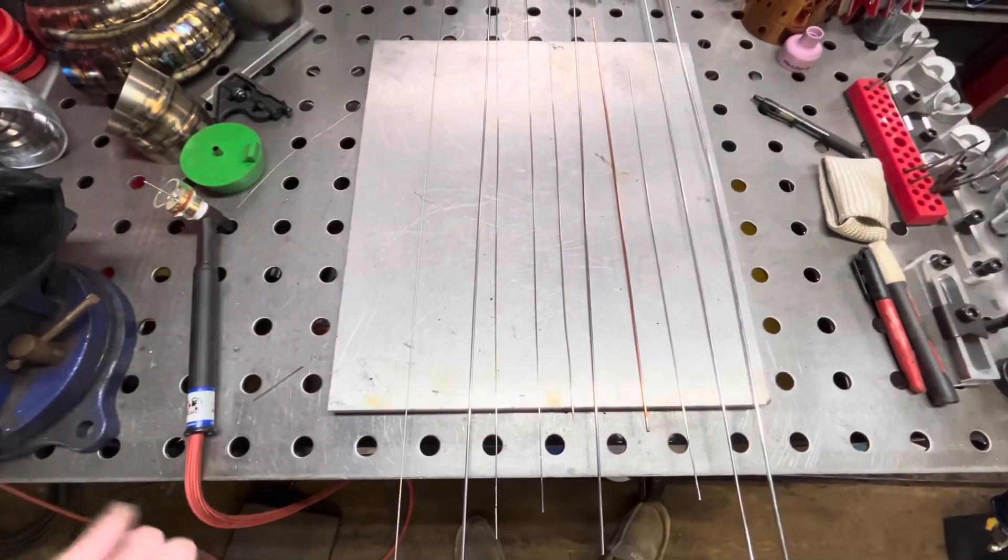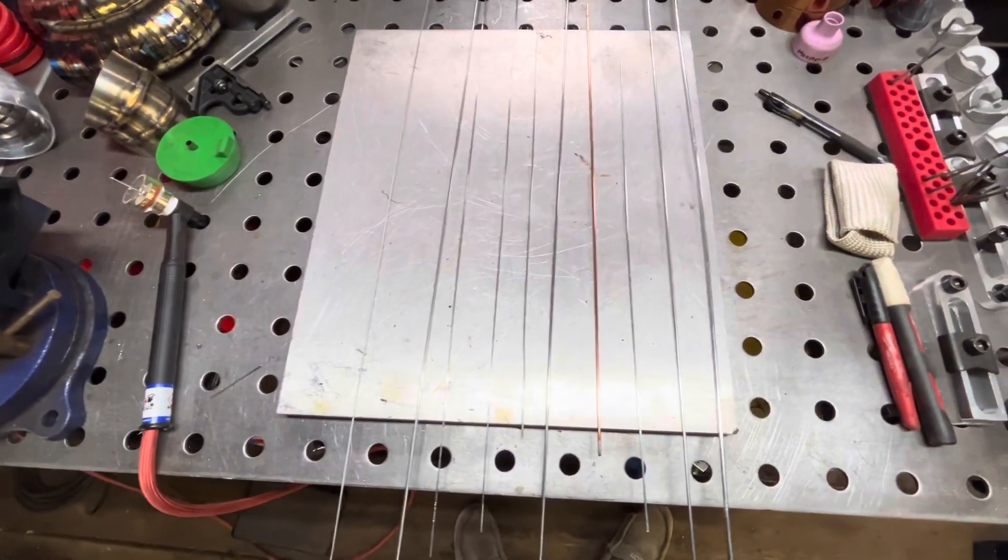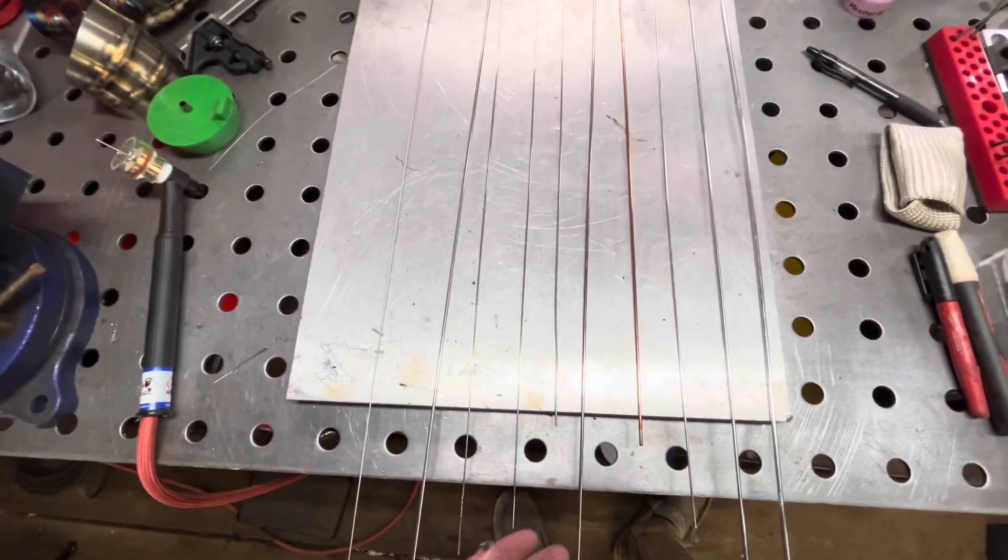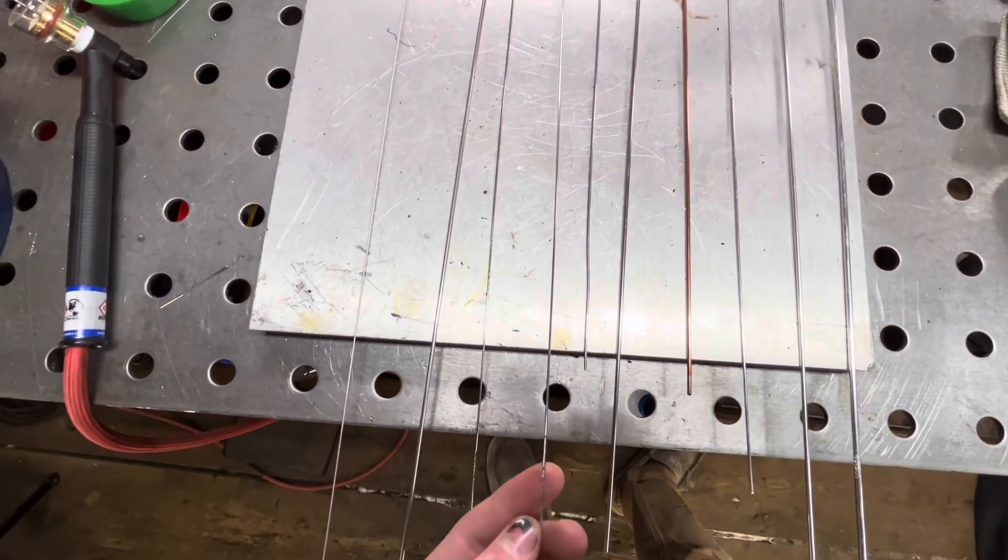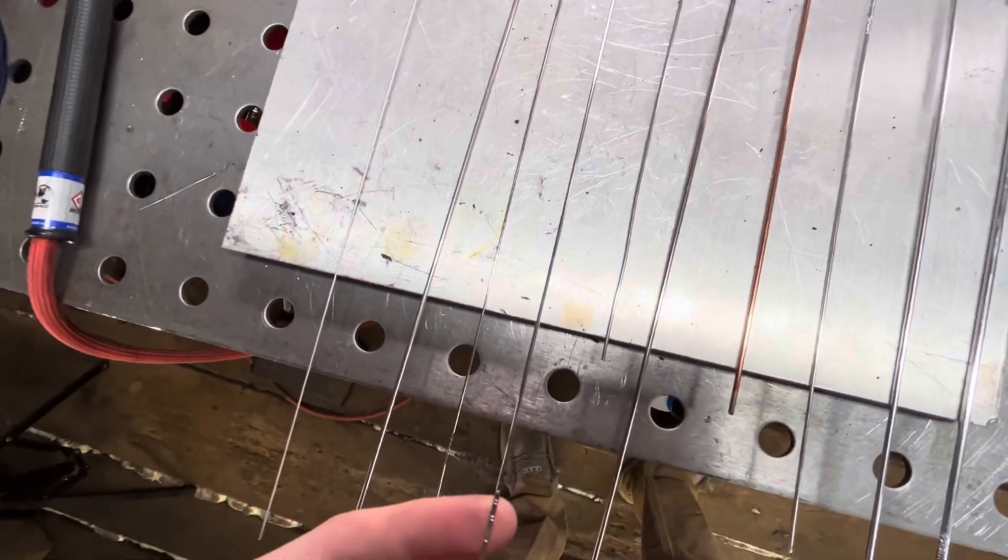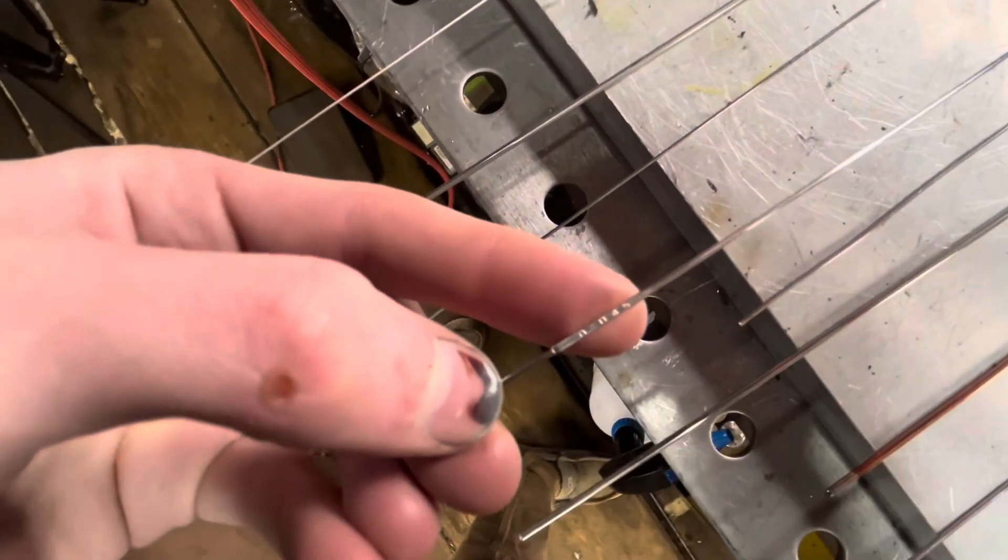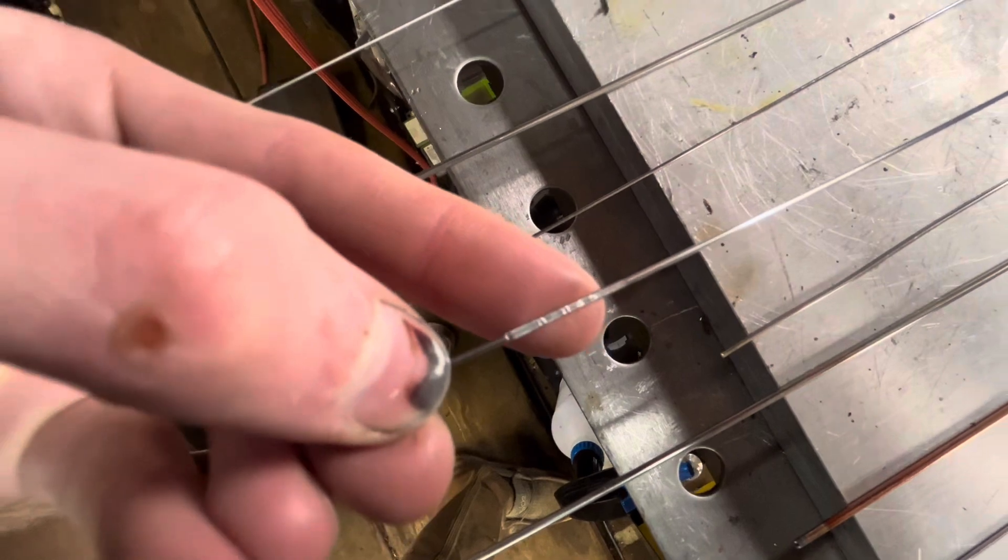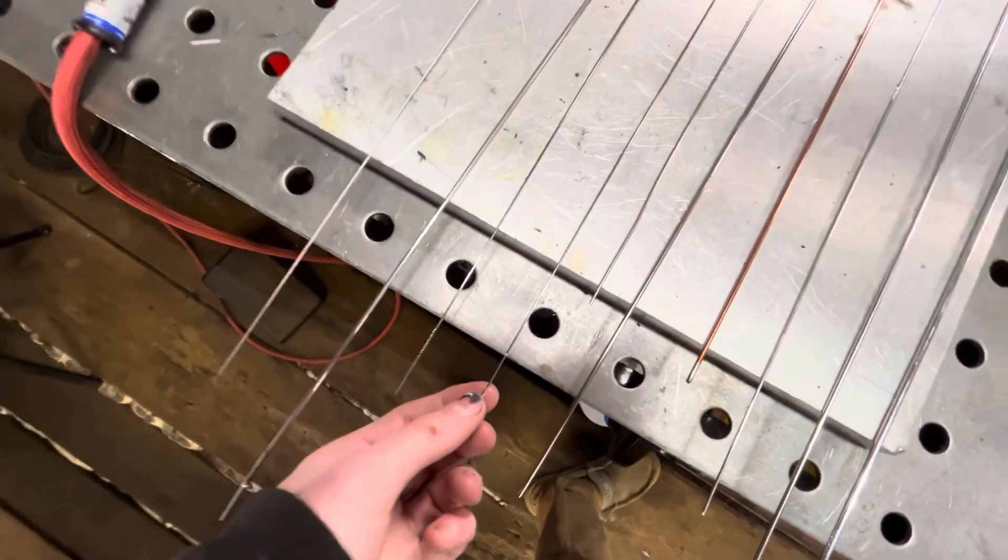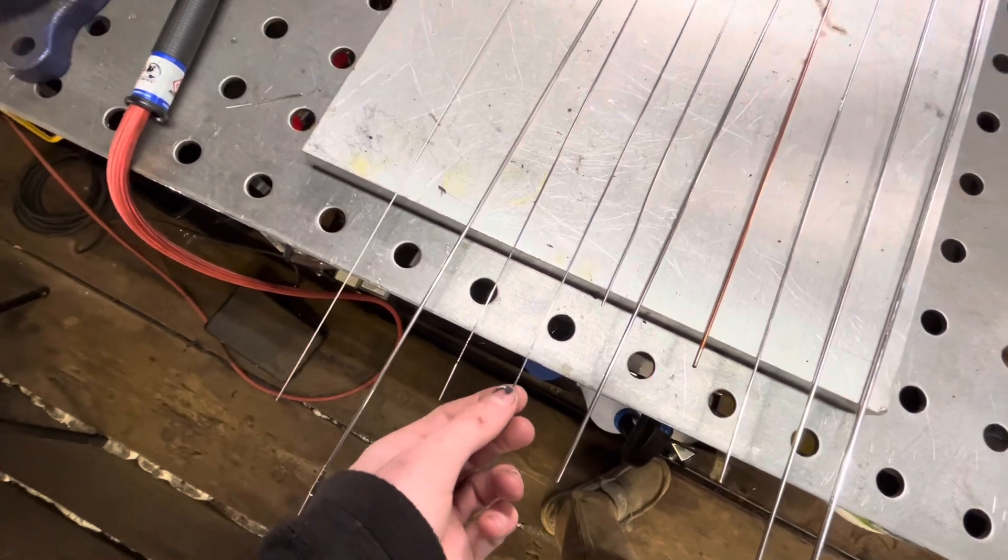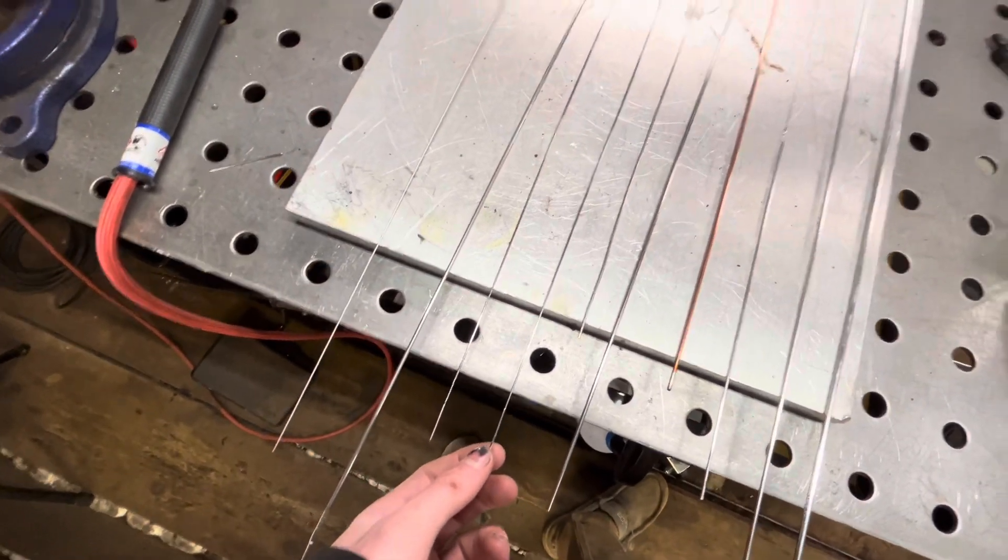So the most common sizes that I use, starting off here we've got 045. This rod is, let's see right there, 0.045. And this is the size that I use for exhaust pipe.